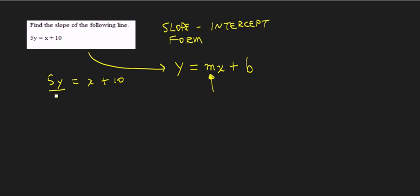We want to get y by itself, so we're going to divide both sides by 5. That means everything on both sides has to be divided by 5. So that cancels, that's why we did that.